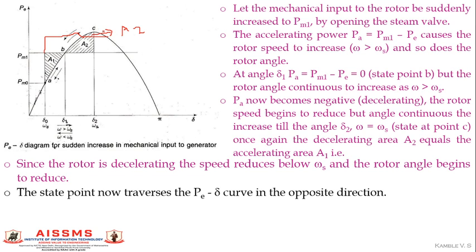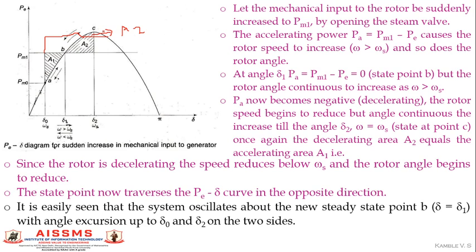It is easily seen that the system oscillates about the new steady state point B, that is delta equals delta1, with angle excursions between delta0 and delta2 on either side.